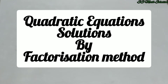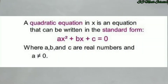What is a quadratic equation? A quadratic equation is an equation of the form ax² + bx + c = 0, where a, b, c are real numbers and a is not equal to 0. This is called the standard form of a quadratic equation.